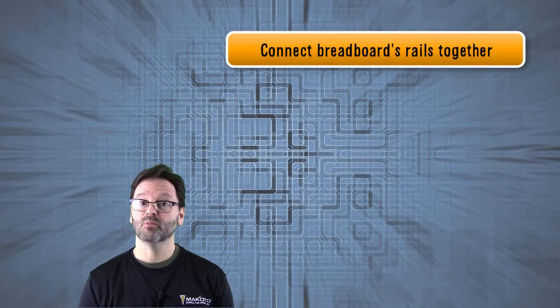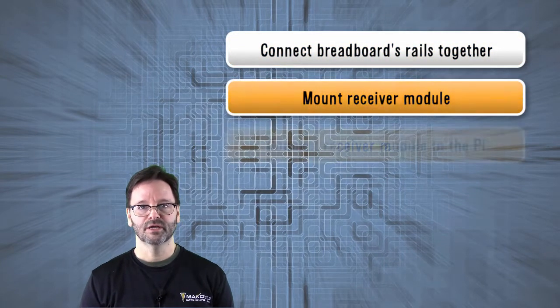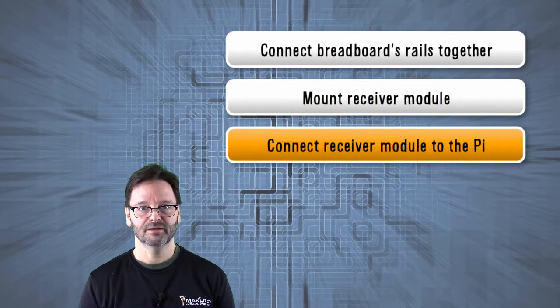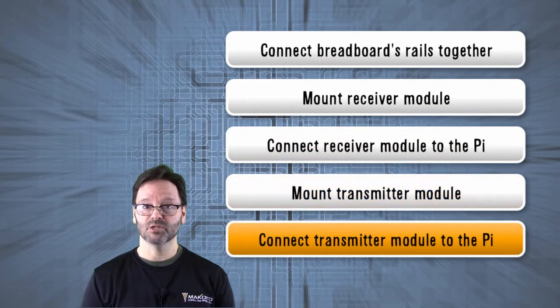Here's what we'll do. Connect the breadboard's rails together, mount the receiver module onto the breadboard, connect the receiver module to the Pi, mount the transmitter module to the breadboard, and connect the transmitter module to the Pi.